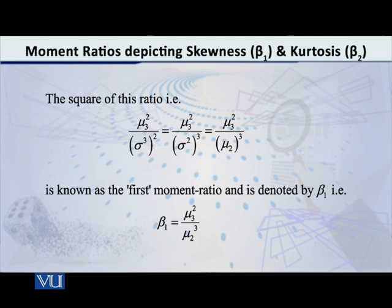But sigma square, the variance, that is the same thing as the second moment about the mean, the second central moment. So therefore, if we put that there, the expression becomes mu 3 square over mu 2 cube. This expression is denoted by beta 1, and this is called the first moment ratio. This is also a measure of skewness.